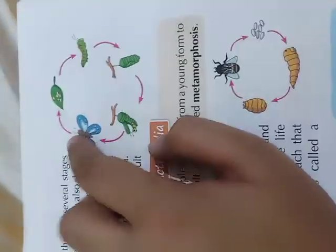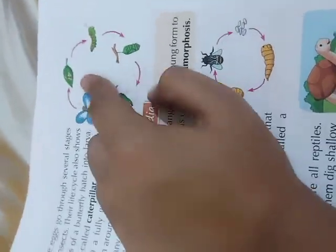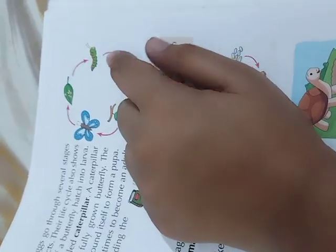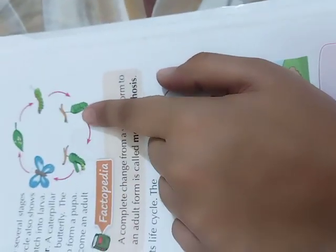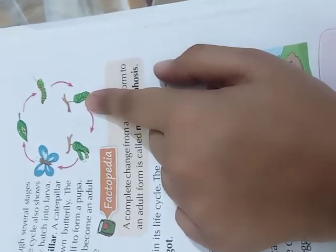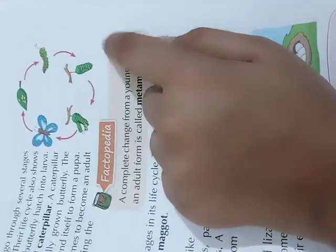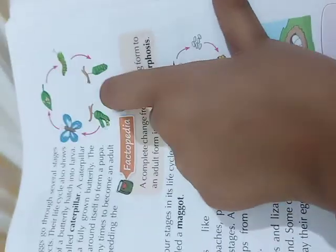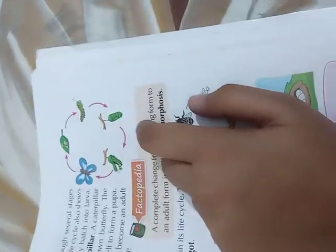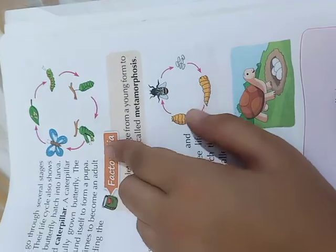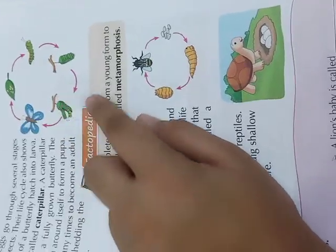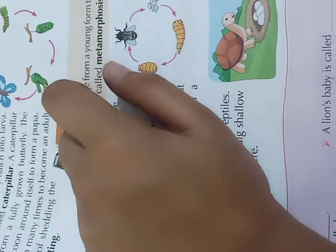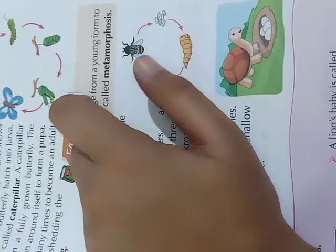Now let's look at the life cycle of a butterfly. First, the butterfly lays eggs on a leaf, and the caterpillar comes out when the eggs hatch. The caterpillar looks very different from a fully grown butterfly. The caterpillar builds a cocoon — C-O-C-O-O-N — outside its body for protection. After some time it becomes a pupa, and in the pupa stage it sheds its skin many times to become an adult. The shedding of skin is known as molting. Then it becomes an adult butterfly.